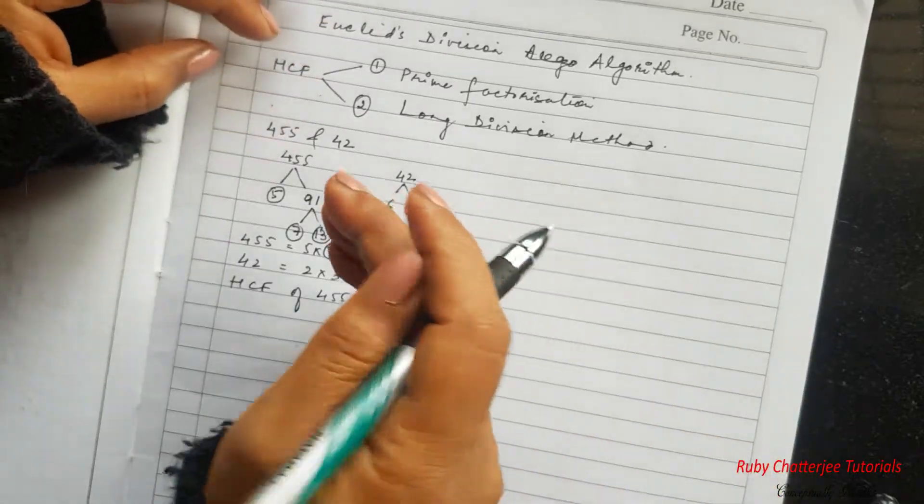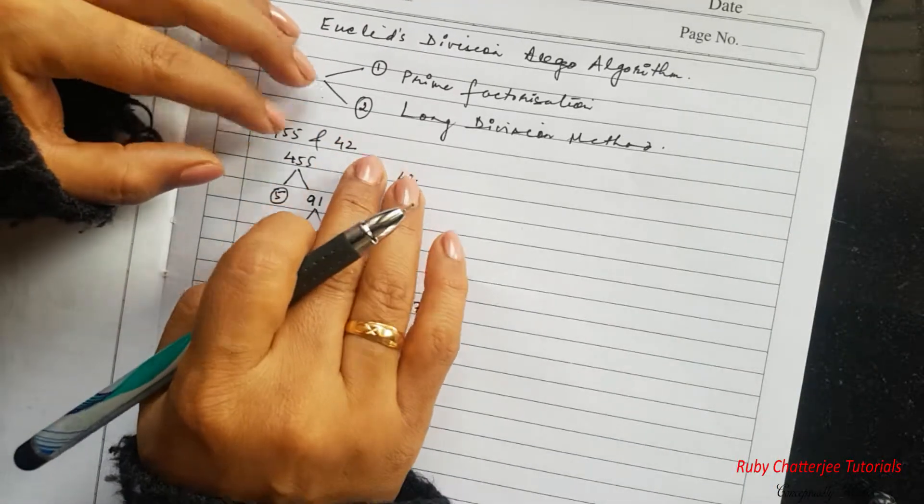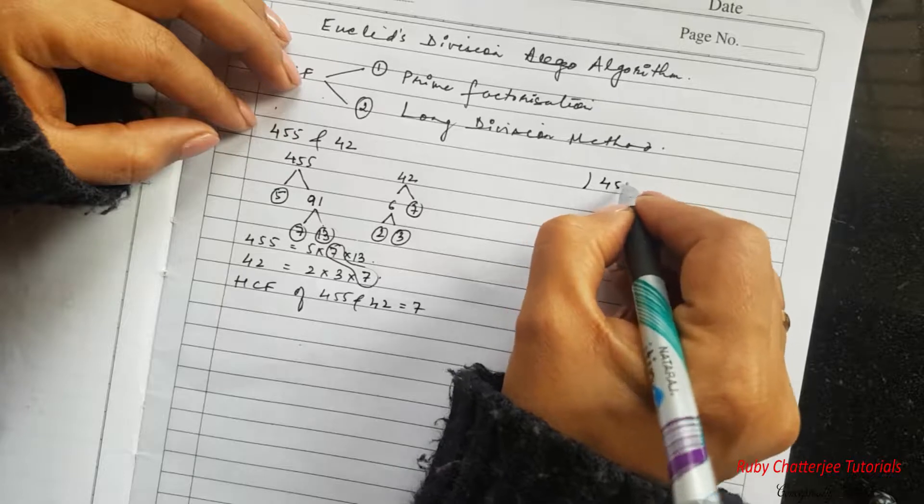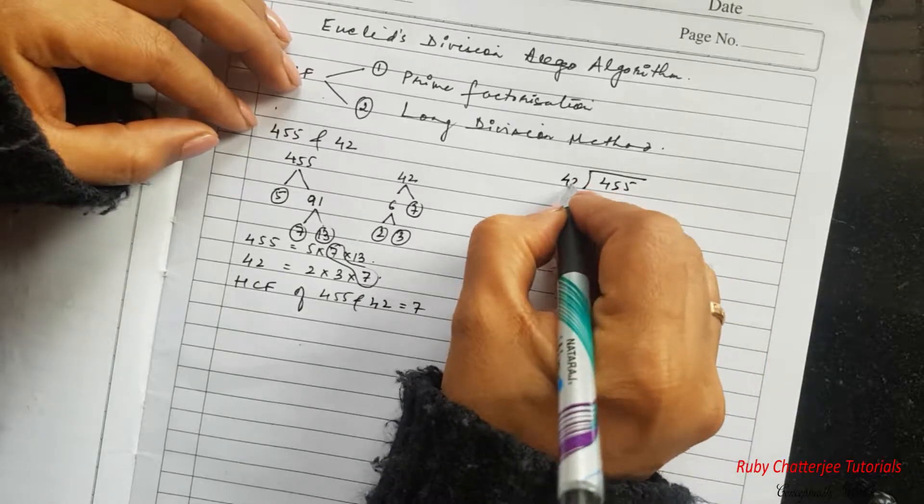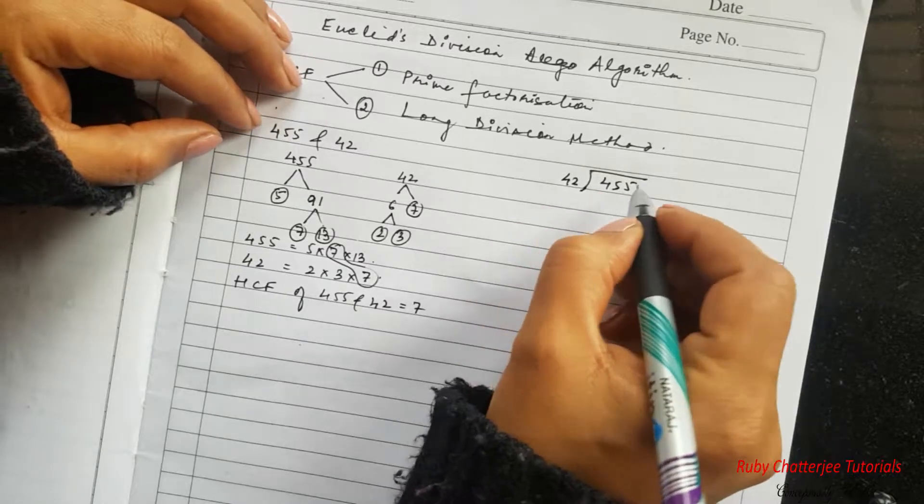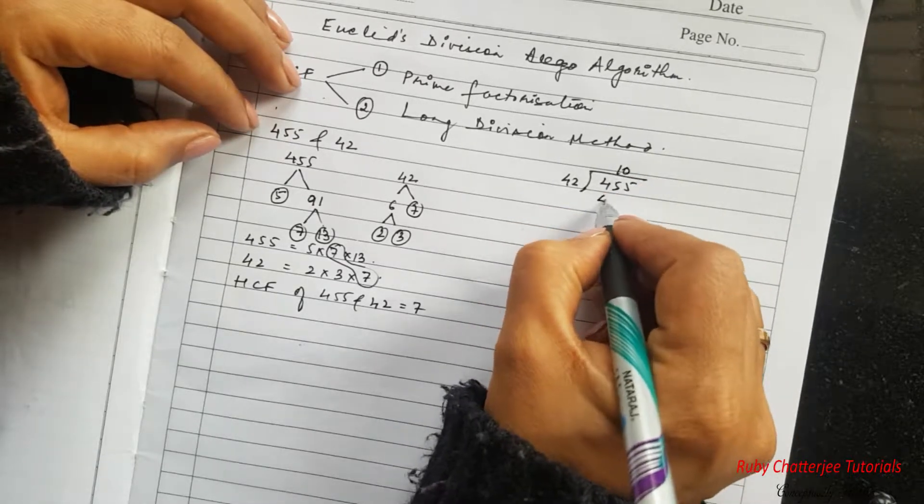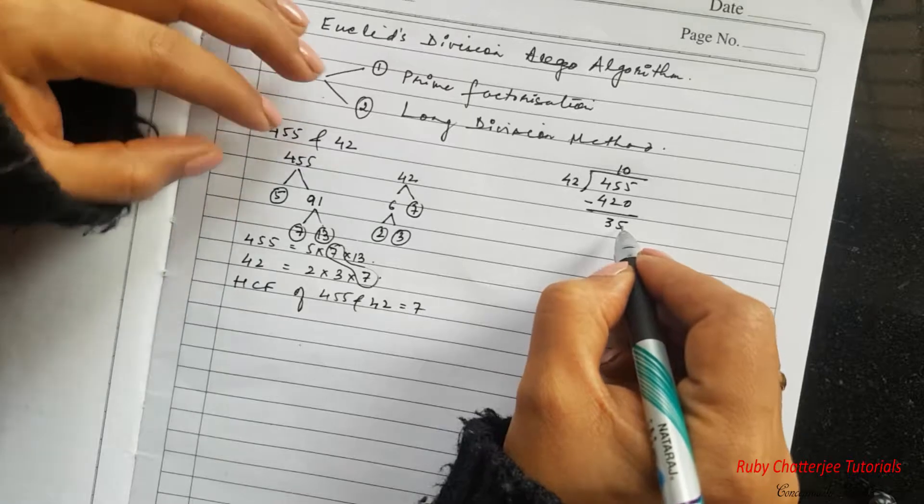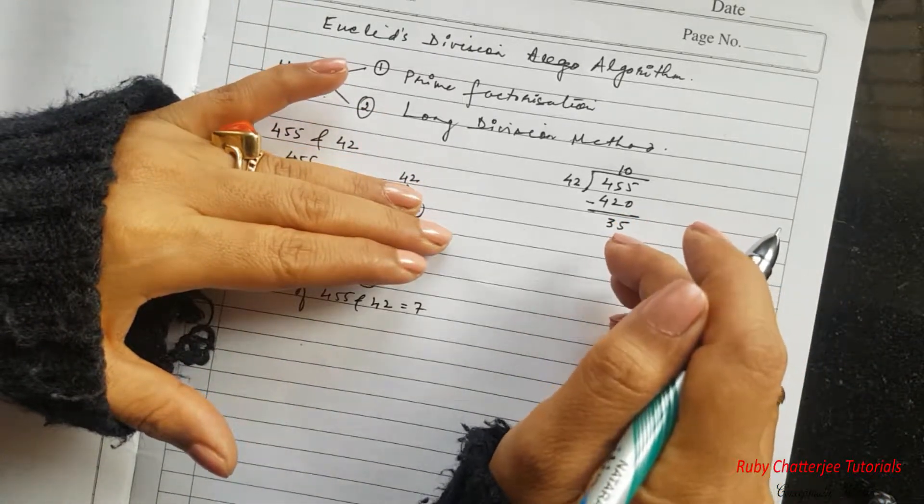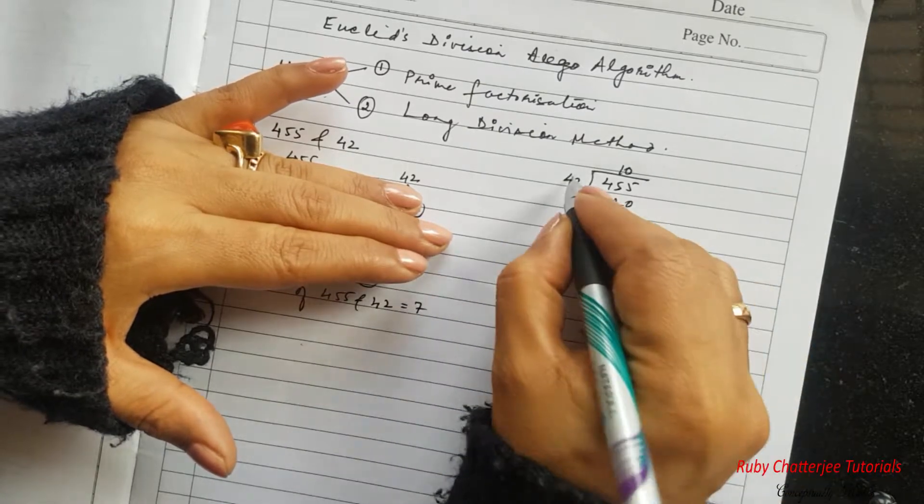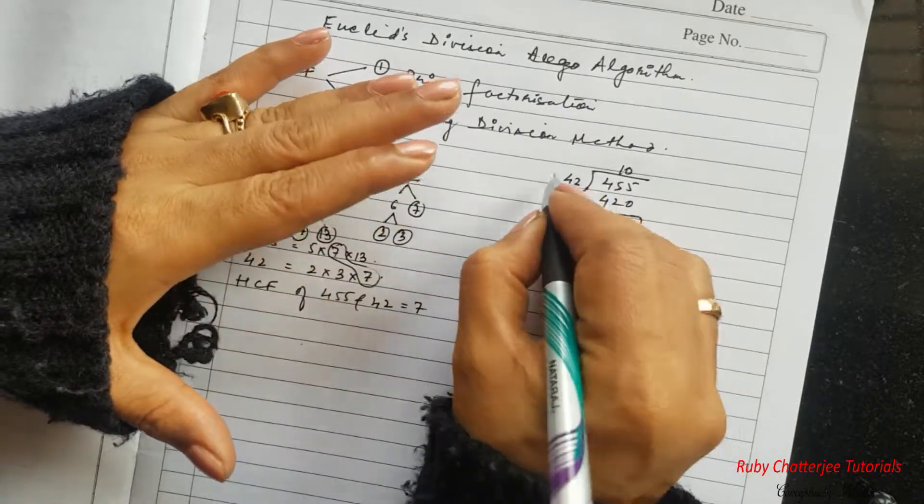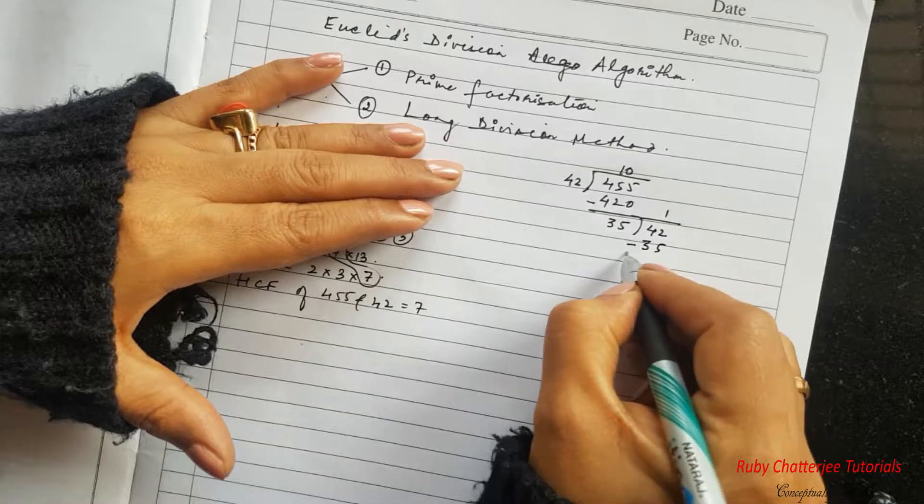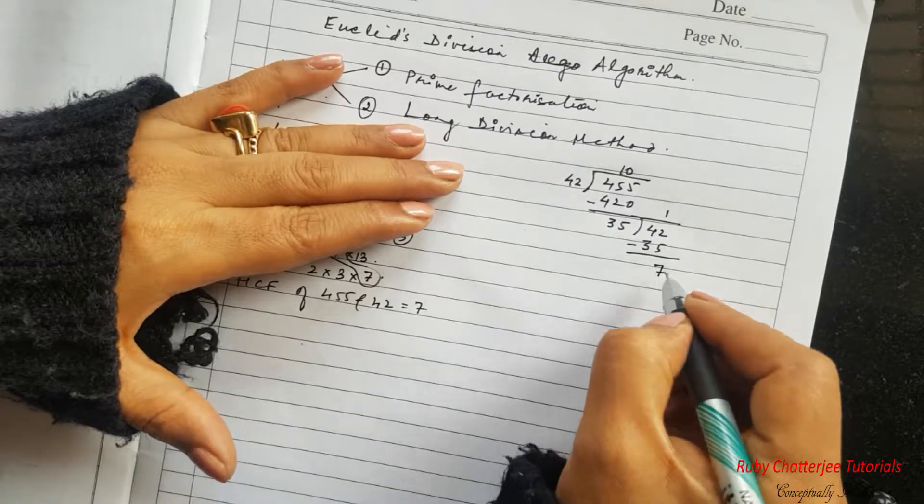And now let us take up finding HCF of these two numbers again by long division method. So for the long division we take 455 to be the dividend and 42 the smaller number to be the divisor. And we divide it so 42 tens are 420 and we are left with 35. Now in this step, 35 becomes the divisor for the next step and dividend is the divisor of the previous step that is 42. And so again 35 ones are 35 and we are left with 7 as the remainder.